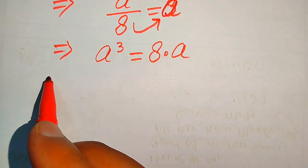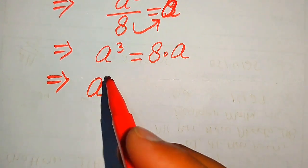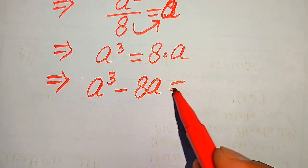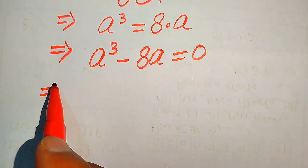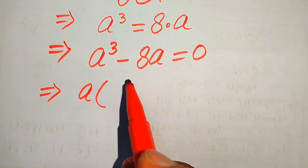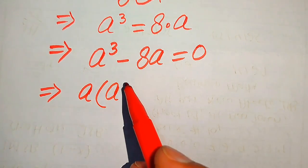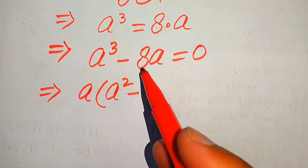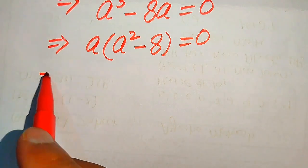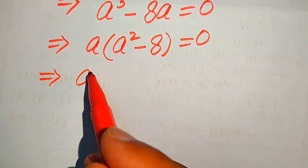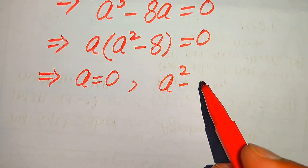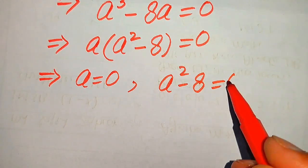We move 8A to the left hand side and it becomes A cubed minus 8A equals 0. Both terms involve A, so we take A as a common factor, giving us A times (A squared minus 8) equals 0.